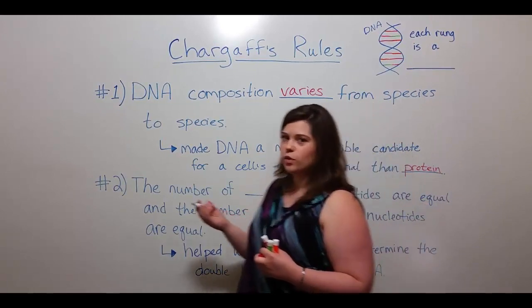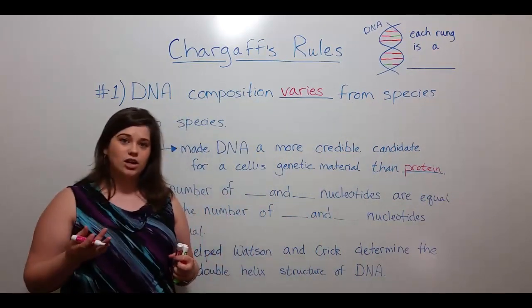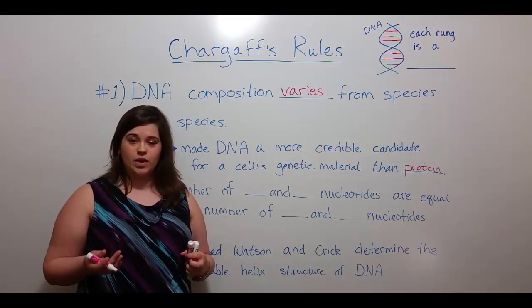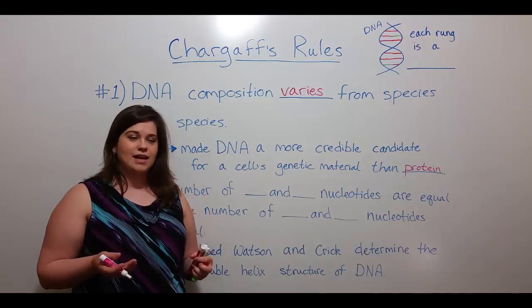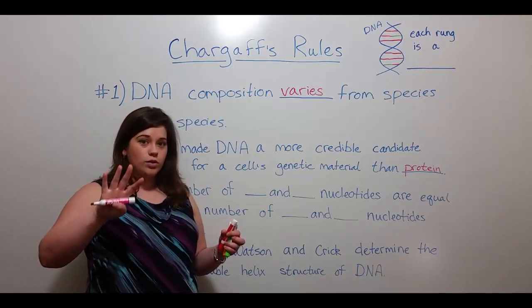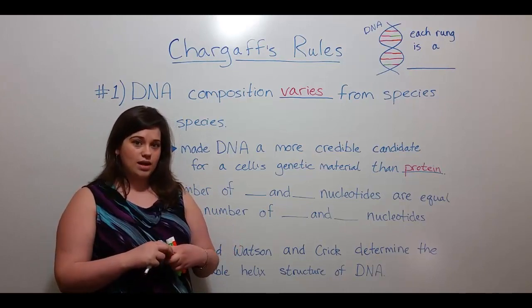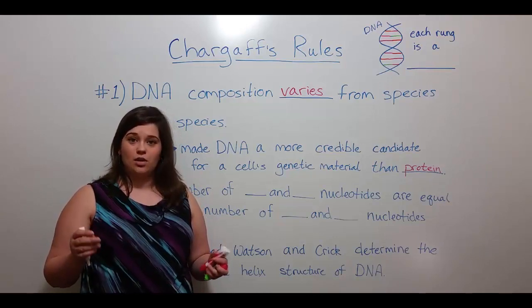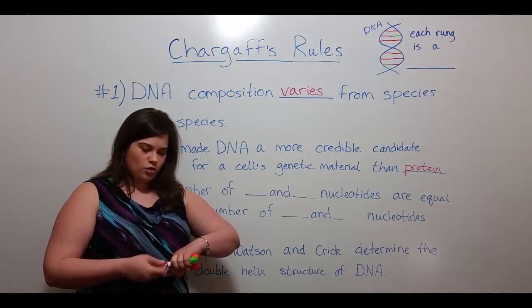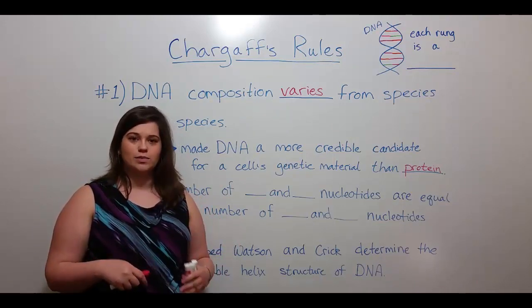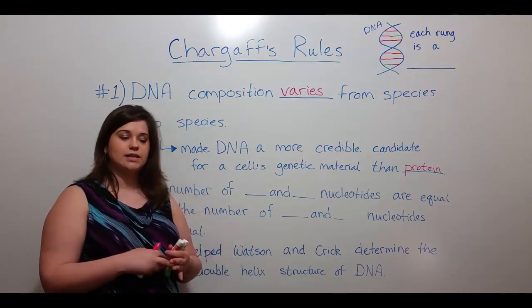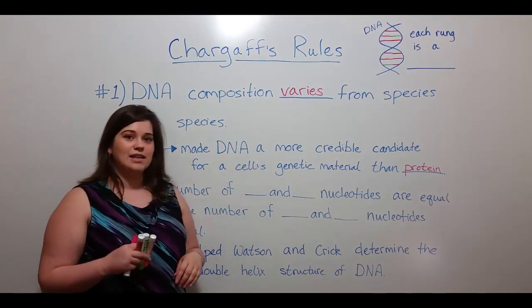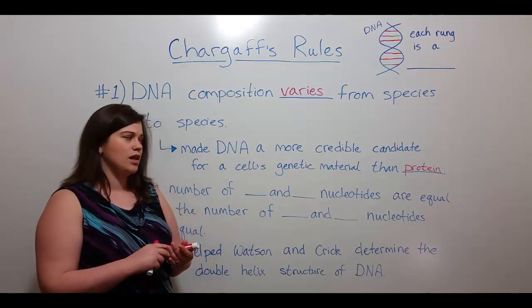At the time this work was being done, protein was considered a good candidate for the genetic material of the cell. One of the reasons for this is that DNA is made up of only four nucleotides — adenine, thymine, cytosine, and guanine — whereas proteins are made up of 20 different amino acids. It was thought that the greater number of amino acids could explain the greater diversity between species. But through the work of Chargaff and others, it was determined that DNA is actually the genetic material of the cell, and not protein.